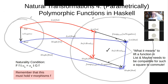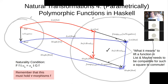What is such a natural transformation? It has components for each and every object in the source category. There's a component for int: a morphism in the target category going from list of ints to maybe of ints. There's a component for bool: going from list of bools to maybe of bools. What is that function? It's 'safe_head'. It takes a list of events and, if that list has a first element, returns a Maybe holding that first element.